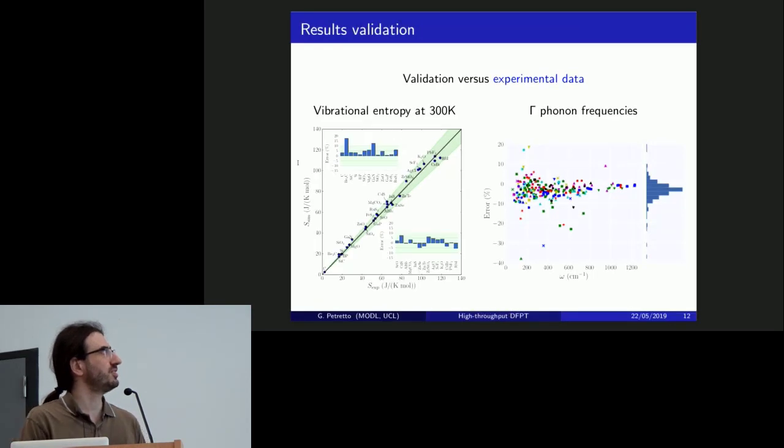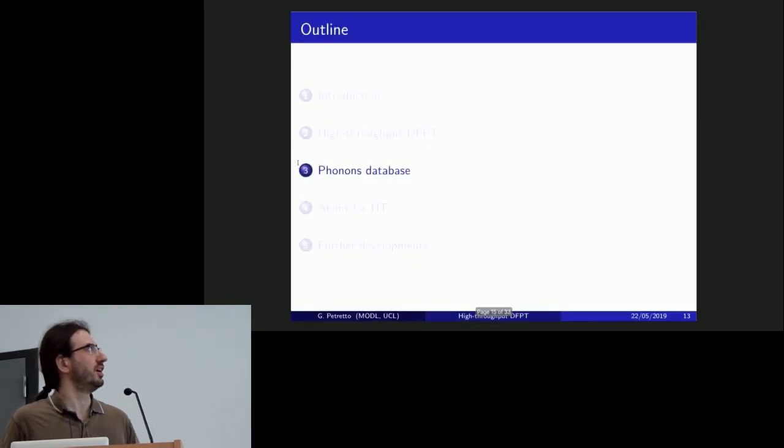And certainly then we also made some check with the experimental data, at least to verify that we were not getting some random results. And we compared with the vibrational entropies and the phonon frequencies at gamma for the materials that were available in literature. I would say that everything fits with the experimental data, or for the outliers, at least with the other results in literature calculated with DFT or DFPT. So we were happy with these and we started making calculations.